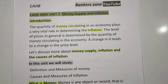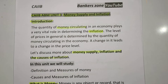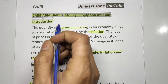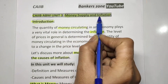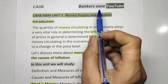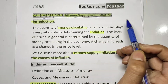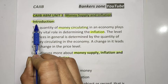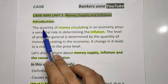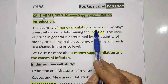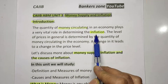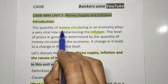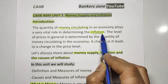Hello friends, in this video we will see the CAIIB Advanced Bank Management. The name of the unit is Money Supply and Inflation — that means how money supply and inflation are related is what we have to see in this unit. The quantity of money circulating in an economy plays a wider role in determining inflation.